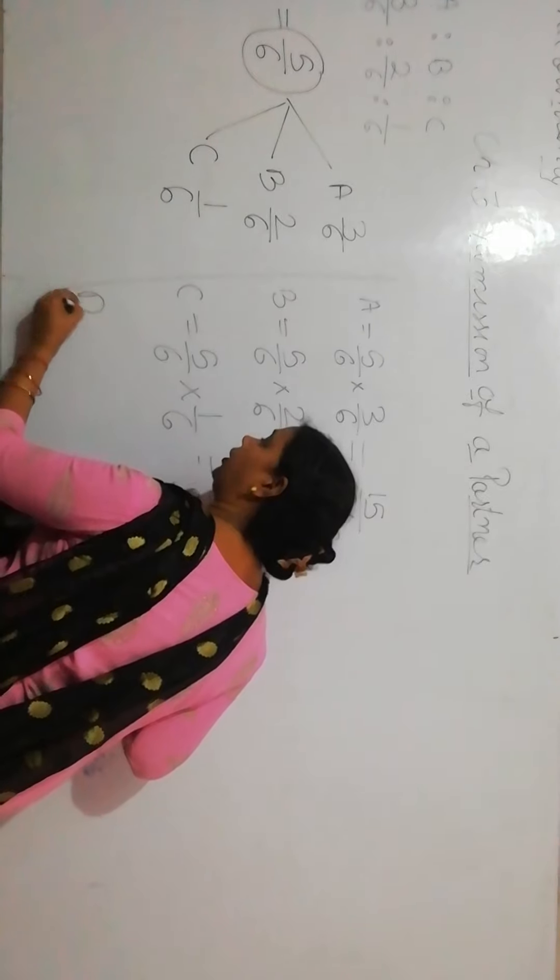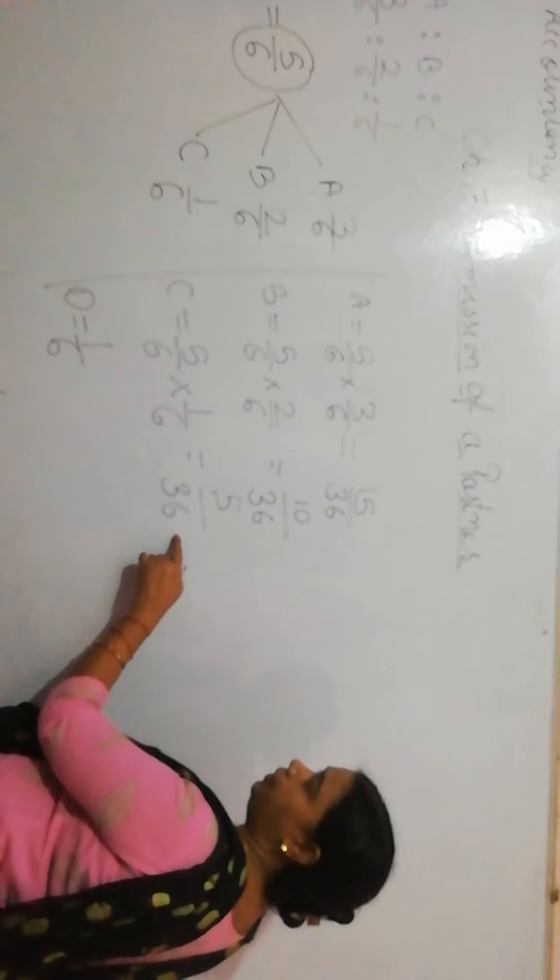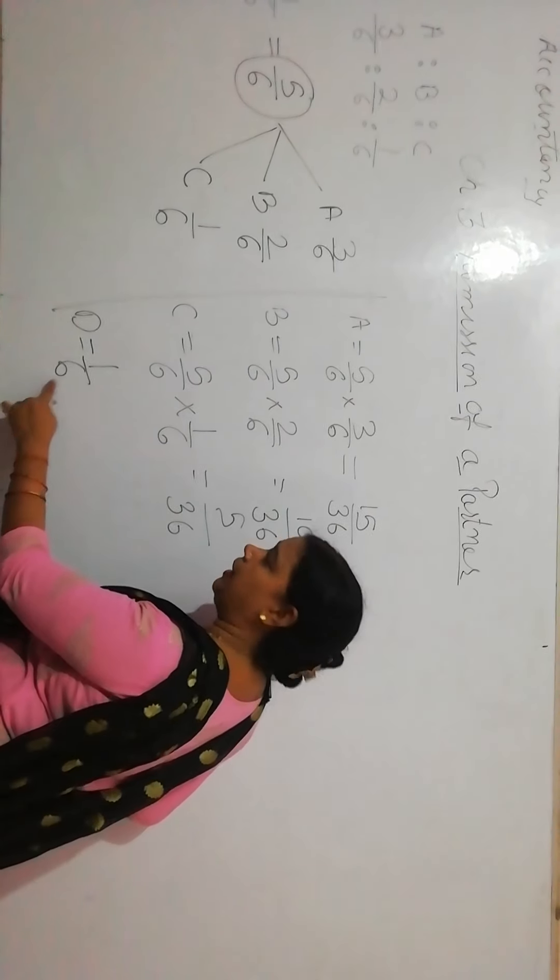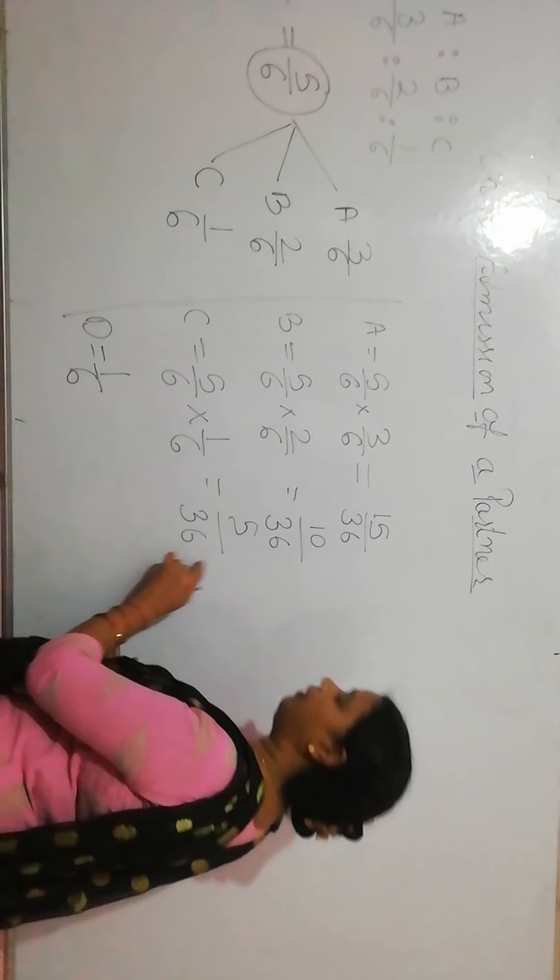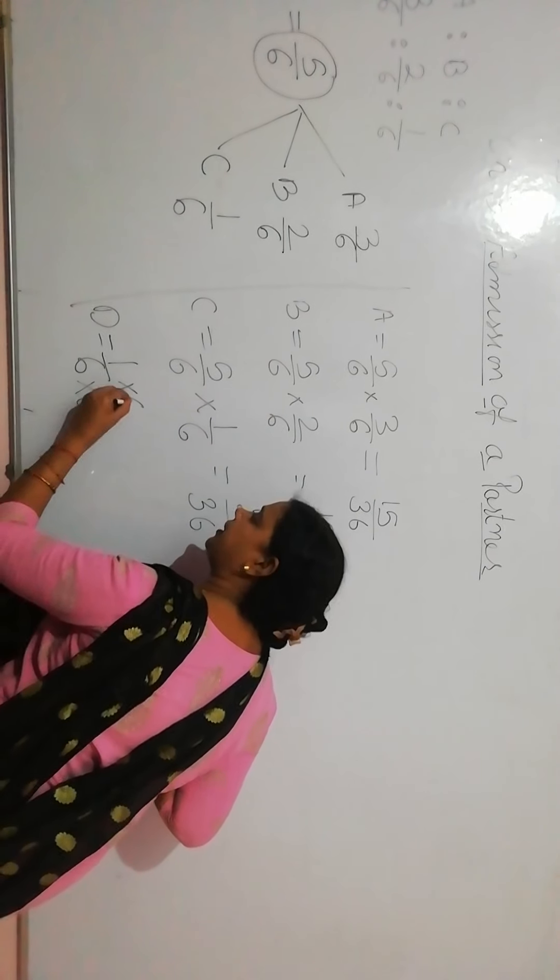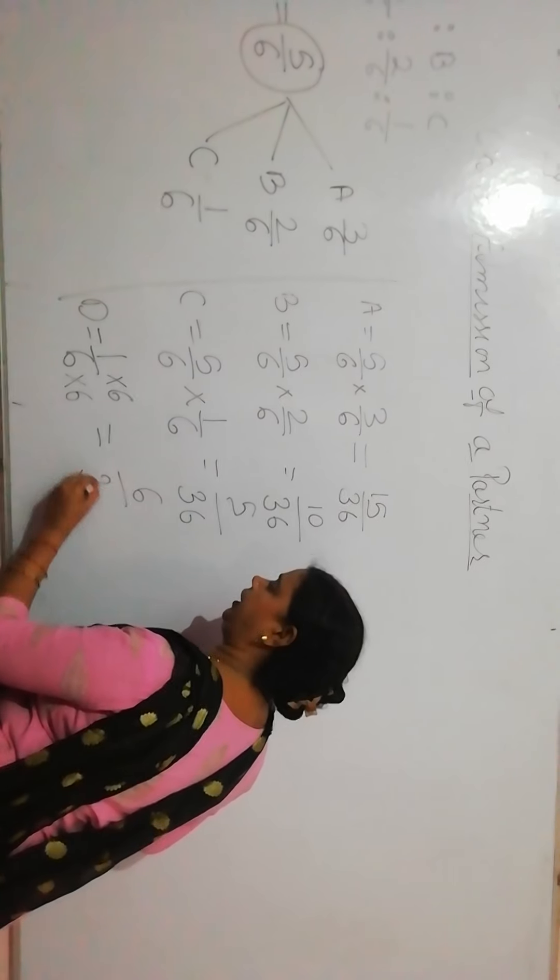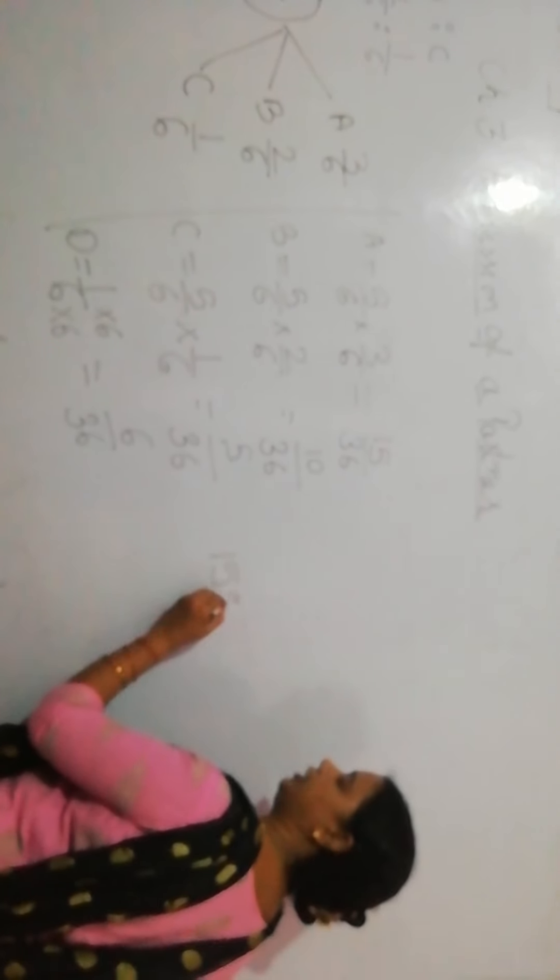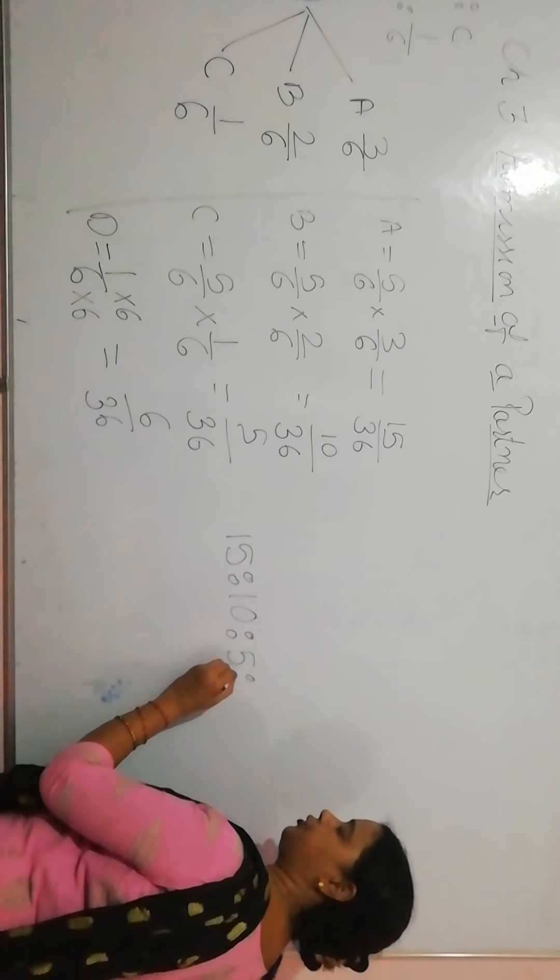How much is D? 1 by 6. But these three denominators are 36, 36, 36. But what is D? 1 by 6. So D can also be equivalent to A, B, C. This means multiply by 6. So D can be 6 by 36. So what is the new profit selling ratio? New profit selling ratio is 15 raise to 10, raise to 5, raise to 6.